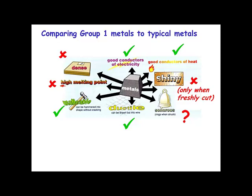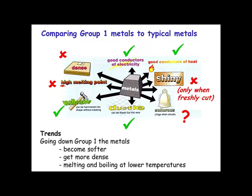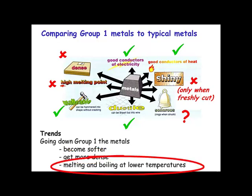However, the two things that aren't usual for metals are their melting point and density. They have a lower melting point than most metals — for example, sodium melts at roughly 97 degrees Celsius. And they have a low density; we'll see that they actually float on top of water. The general trends of Group 1 metals: they become softer as we move down the group, more dense as we move down, and their melting point and boiling point become lower as we go down the group.